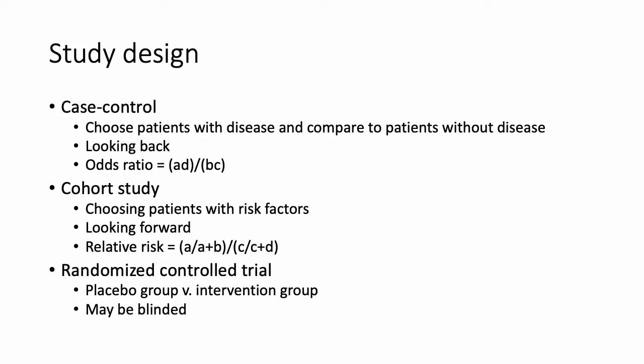Now I'm going to talk about different study designs that you may be asked about on the CREOG exam. Case control and cohort studies are the most commonly tested observational studies. In a case control study, you choose patients with the disease, compare them to patients without that disease, and look backwards at their exposures. This yields an odds ratio — the odds of exposure in patients who developed the disease divided by the odds of that exposure in patients without the disease — which comes down to A times D over B times C.